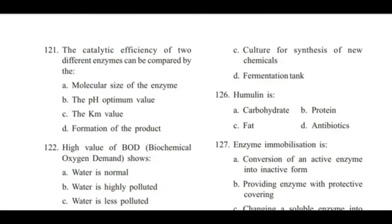Question 121: The catalytic efficiency of two different enzymes can be compared by — the molecular size of the enzyme, the pH optimum value, the Km value, or formation of the product? Answer is C, the Km value. Km is known as the Michaelis-Menten constant; it represents the affinity of an enzyme for a substrate.